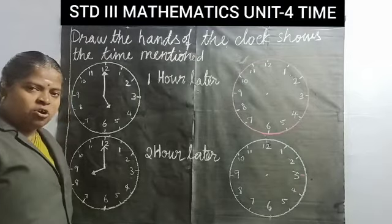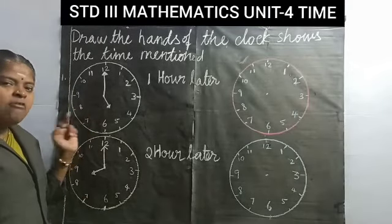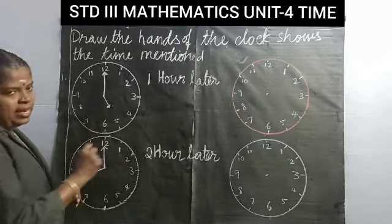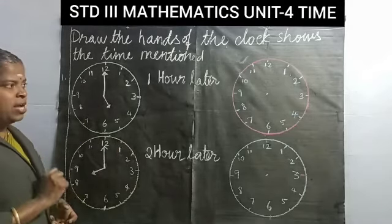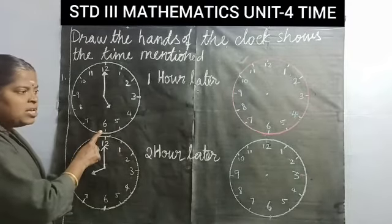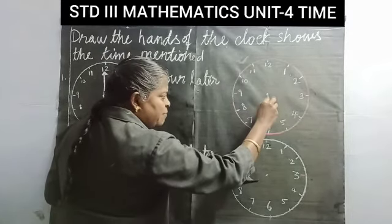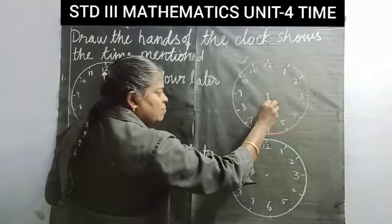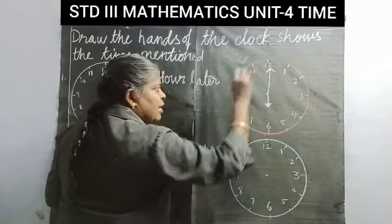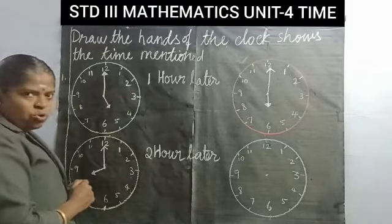Now we can draw the hands of the clock. What time is it? It's 5 o'clock. We have to draw 1 hour later. So after 5 comes 6 — we have to draw 6 o'clock. Draw the shorter hand pointing to 6 and the longer hand at 12. So 1 hour later than 5 o'clock is 6 o'clock.